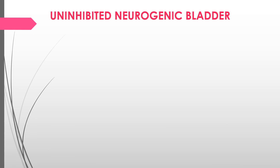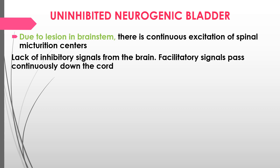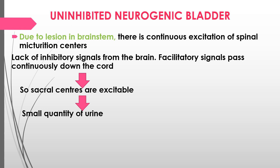The uninhibited neurogenic bladder is due to a lesion in the brainstem. There is continuous excitation of the spinal micturition center, increasing the frequency of micturition. Even a small quantity of urine in the bladder elicits the micturition reflex. Due to the brainstem lesion, there is lack of inhibitory signals from the brain, and facilitatory signals pass continuously down the cord, keeping the sacral centers excited.